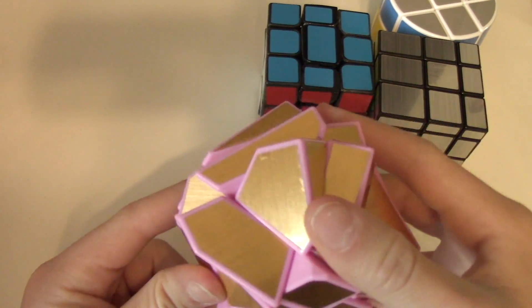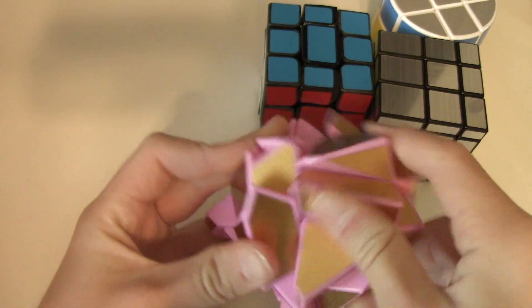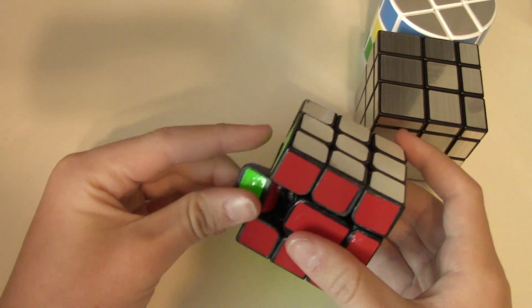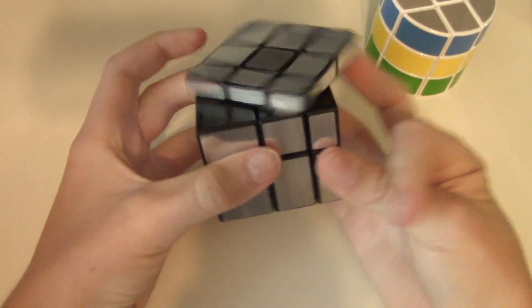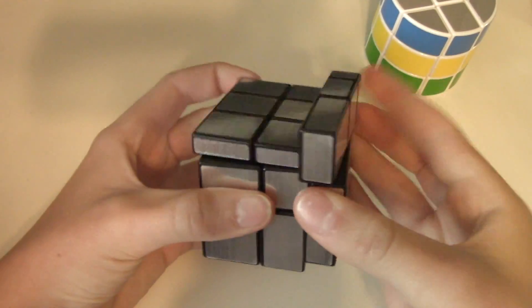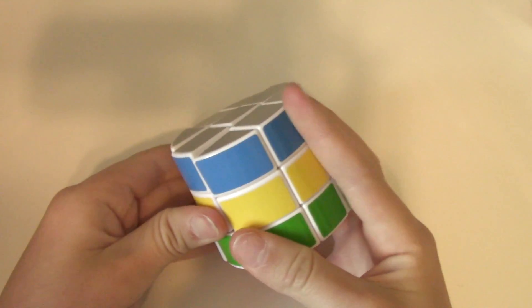This is the FangShi Fengshi Ghost Cube. This is also one of the only cubes in my collection I can't solve. Here is my most proud mod, the Fisher Cube, but sometimes the caps fall off. This is my favorite shape mod, the Mirror Blocks. And then here is a Dayan Tanglong 3x3 barrel.